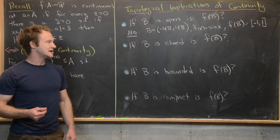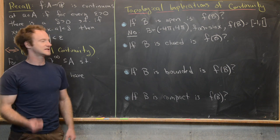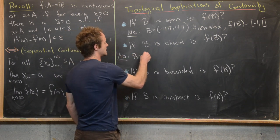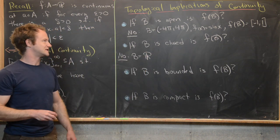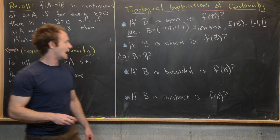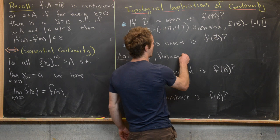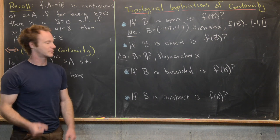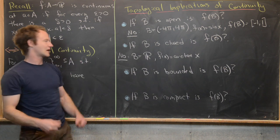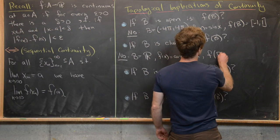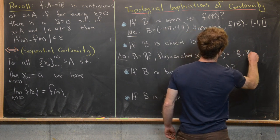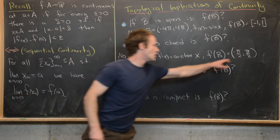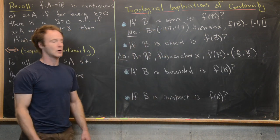The next question: if B is closed, is f(B) closed? The answer is also no. Take B to be all real numbers — the set of all real numbers is both open and closed — and take f(x) = arctan(x). Recall that the inverse tangent has asymptotic behavior in both directions, so f(B) is the open interval from negative π/2 to π/2. So here we have a closed set mapping to an open interval, which is never closed.